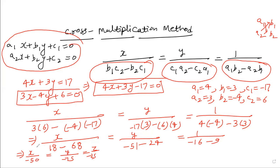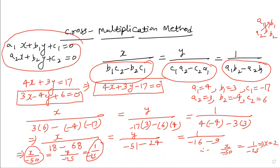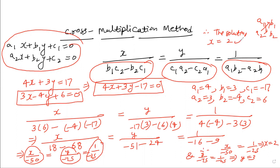To find x, equate the x-fraction with the constant fraction: x ÷ (−50) = 1 ÷ (−25), so cross-multiplying gives x = 2. For y: y ÷ (−75) = 1 ÷ (−25), so y = 3. Therefore, the solution is x = 2 and y = 3. That is how the cross multiplication method works.